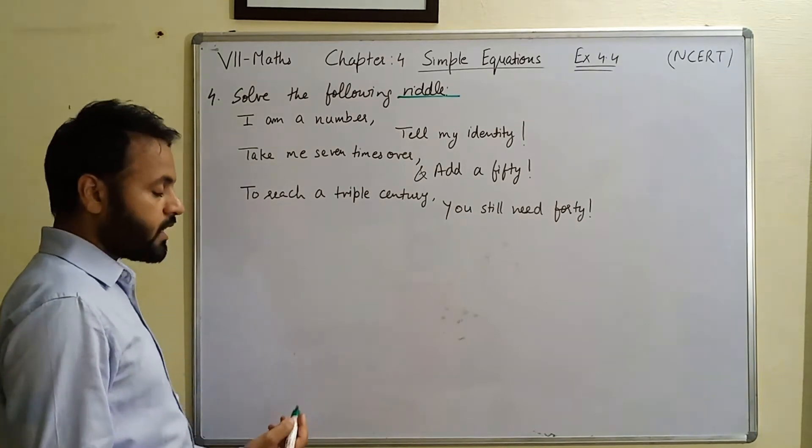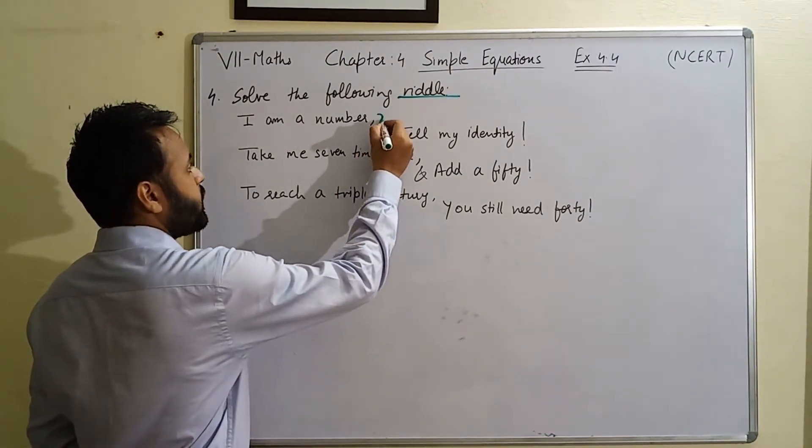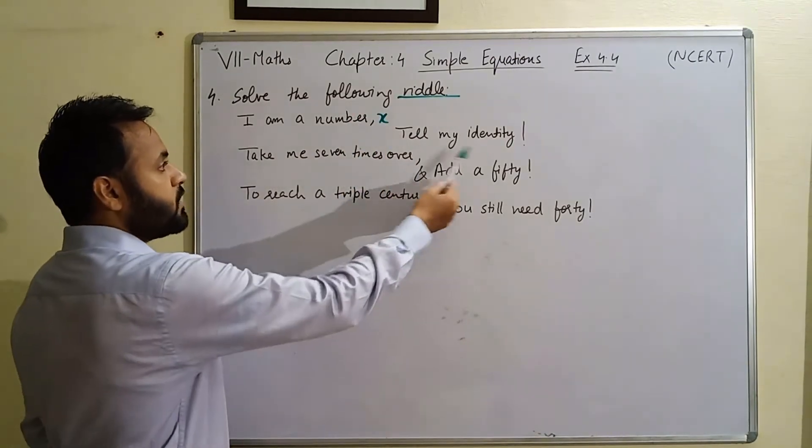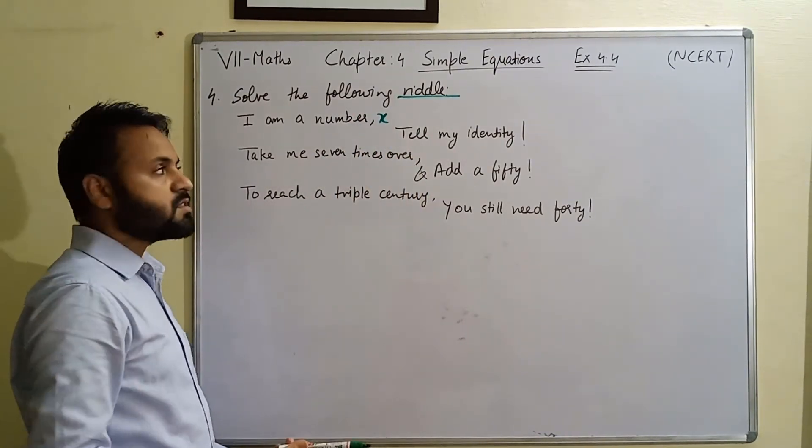So first of all, we will assume x. So let the number - I am a number - let this number be x. We have to tell its identity. That means we have to find this number. What is this number?